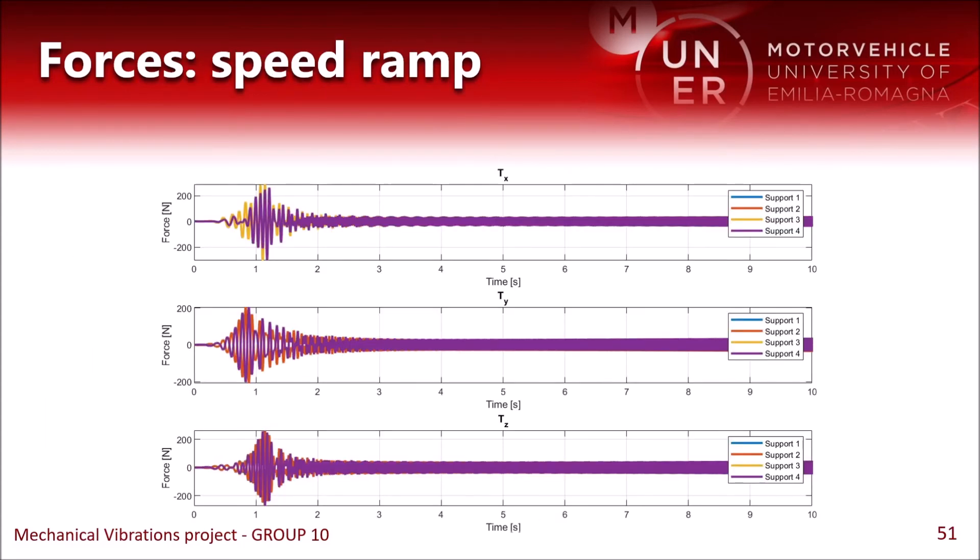These are the forces transmitted during the speed ramp. For example, we have separated the forces for each of the four mounts, and we can see that some of the lines overlap each other. That is because of the symmetry of the disposition of the four engine mounts with respect to the centre of mass. We can also note that the curves have the same shape and behaviour as the ones of the system response.